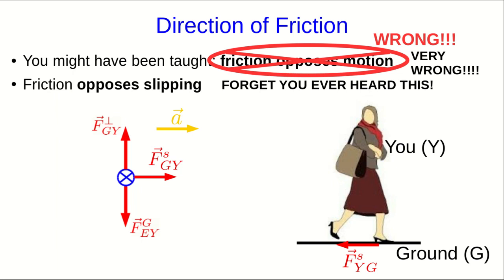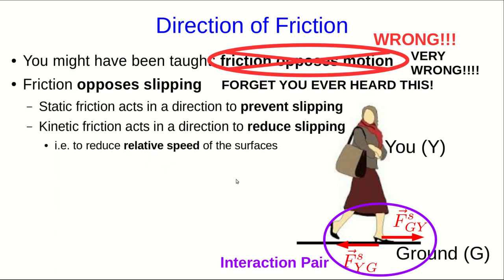How does that happen? You push back on the ground and exert a static friction back on it. And the ground pushes forward on you. This is something I mentioned in the first lecture of this unit. It's an interaction pair. Two forces that act in exactly opposite directions and have exactly the same magnitude. In this case, you on the ground and the ground on you.